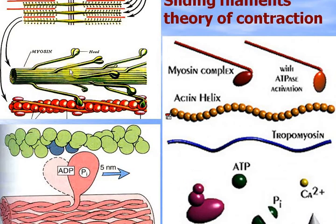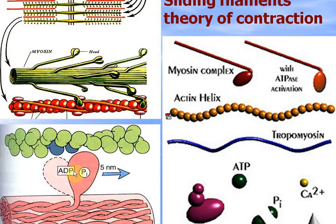Now I will describe the molecular mechanism of contraction. Myosin filaments — the heads connect with actin filament binding sites. After connection, ATP is destroyed to ADP plus phosphate, and it provides energy for movement of the head, which moves and pushes the actin filament 5 nanometers distance.